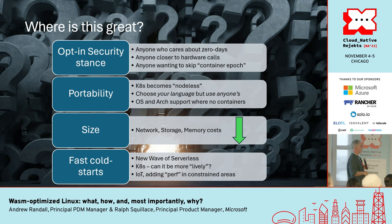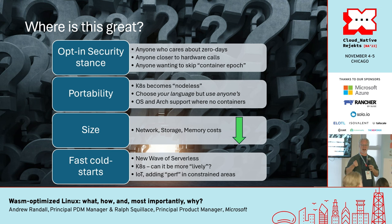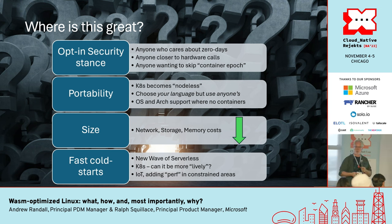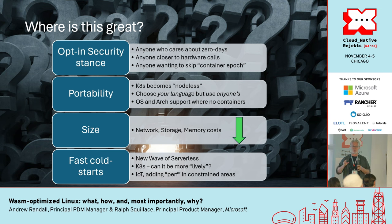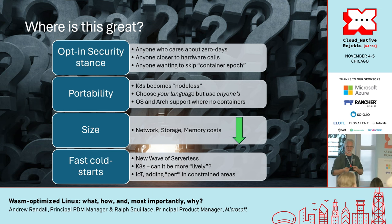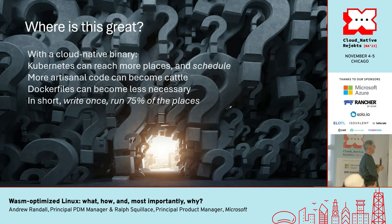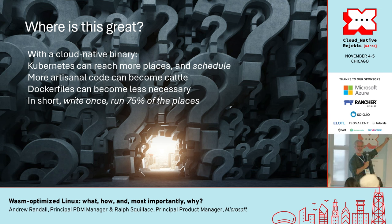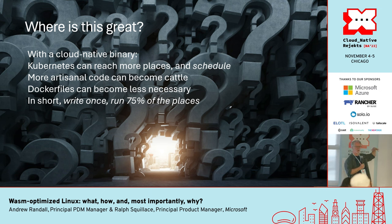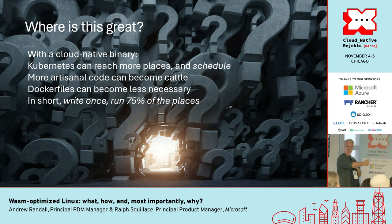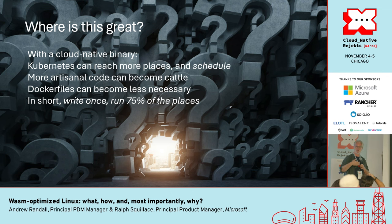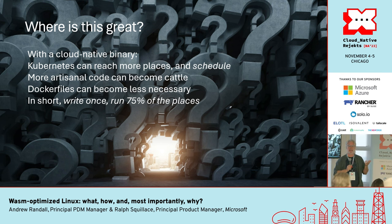Fast cold starts mean a new wave of serverless; Kubernetes can become more lively, closer to a real-time reactive distributed operating system than it is with just containers. In IoT, you can add performance to very constrained environments because things are much smaller and start faster — the network connection can be flakier and you can still deploy normally. Kubernetes can reach more places and be used as a scheduler, not just an orchestrator. Dockerfiles become less necessary even if containers remain the core workload.